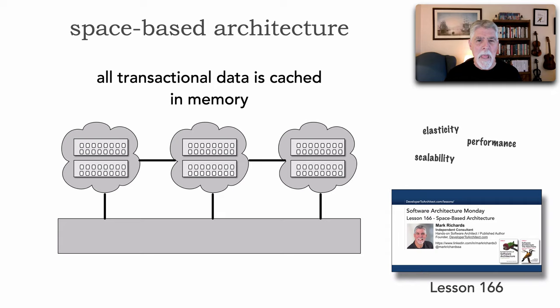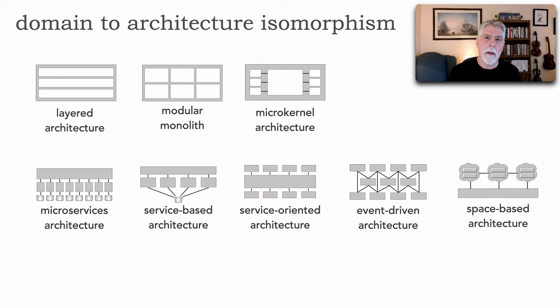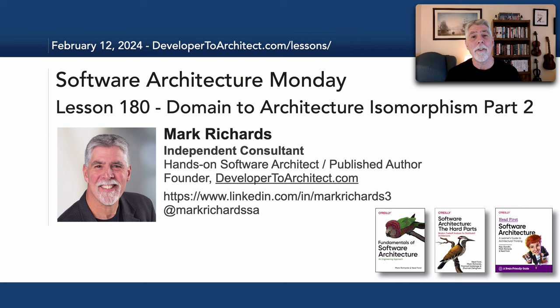So there you have it — the shape of each of these eight common architecture styles. You can now take the shape of your problem and see if it matches the shape of an architecture you're considering, not only from the characteristics standpoint but the overall shape of that particular architecture. This has been lesson 180, part two of Domain to Architecture Isomorphism. Stay tuned in two more Mondays for the next lesson in Software Architecture Monday.